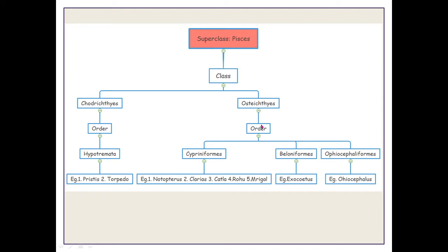From the Osteichthyes, we have to study specimens from three orders: Cypriniformes, Beloniformes, and Ophiocephaliformes. From the Cypriniformes, we have to study five examples of fishes.